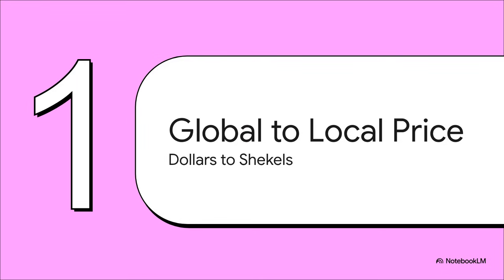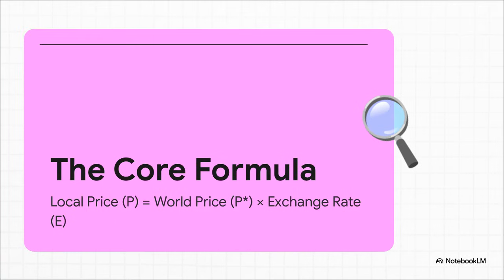First things first, we need a starting point. And it all begins with two key pieces of info: what the car costs in its original currency, in this case US dollars, and the current exchange rate. So at its heart, the basic math is actually super simple. The local price, which we'll call P, is just the world price, we'll call that P star, multiplied by the exchange rate, or E. This little formula is basically the foundation for figuring out the price of almost any imported good.